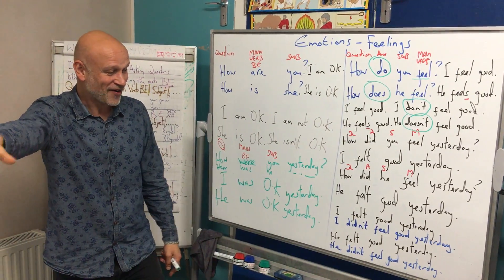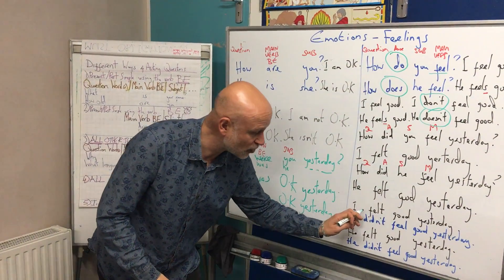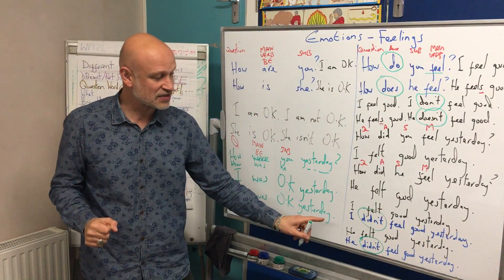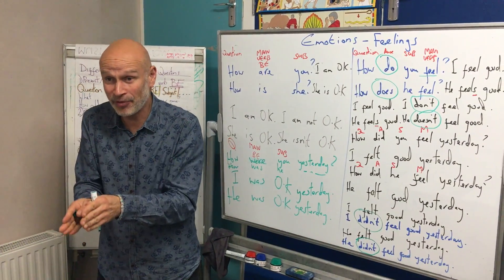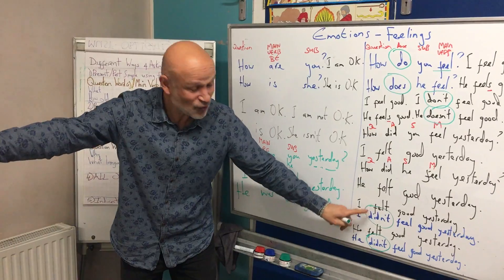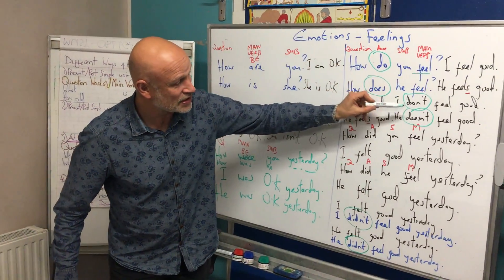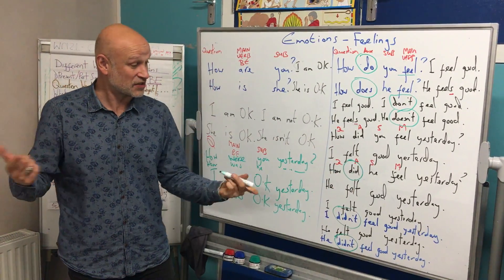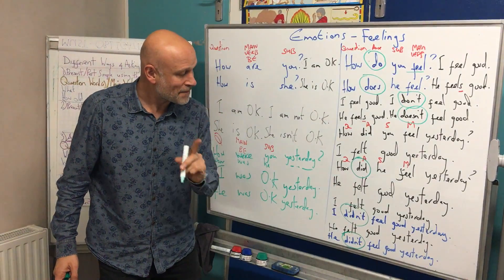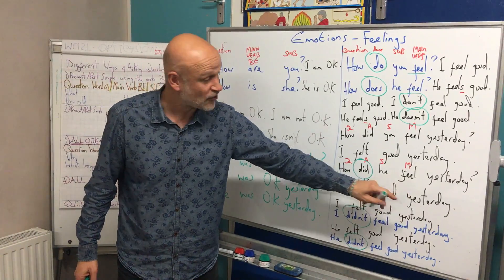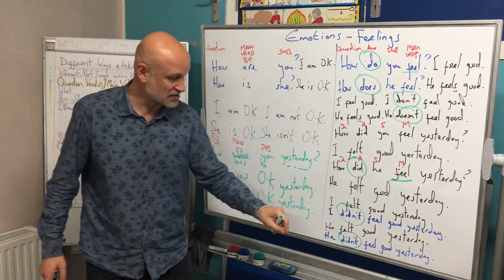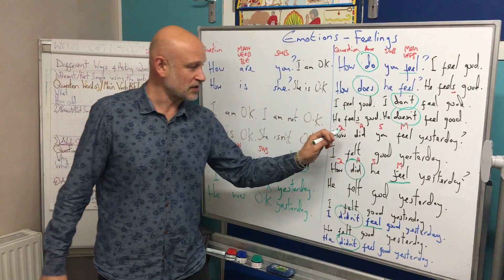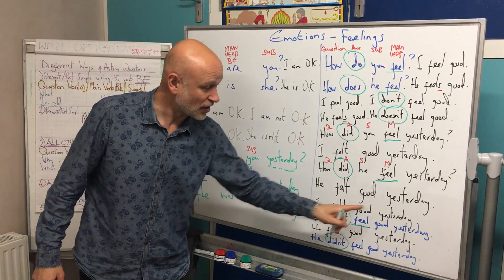But remember — in the negative, you're still using the auxiliary verb 'do.' In the past, that becomes 'didn't.' So: I didn't feel good yesterday, he didn't feel good yesterday. Remember that the main verb is always the infinitive when we use an auxiliary verb — do, does, don't, doesn't, did, didn't. How did he feel yesterday? I didn't feel good yesterday. How did you feel yesterday? He didn't feel good, I didn't feel good.